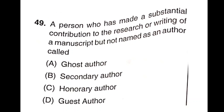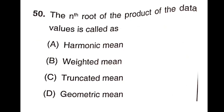Question 49: A person who has made a substantial contribution to the research or writing of a manuscript but is not named as the author is called a ghost author. Question 50: The N-th root of the product of the data values is called the geometric mean — not harmonic mean, weighted mean, or truncated mean. Geometric mean is the right answer.